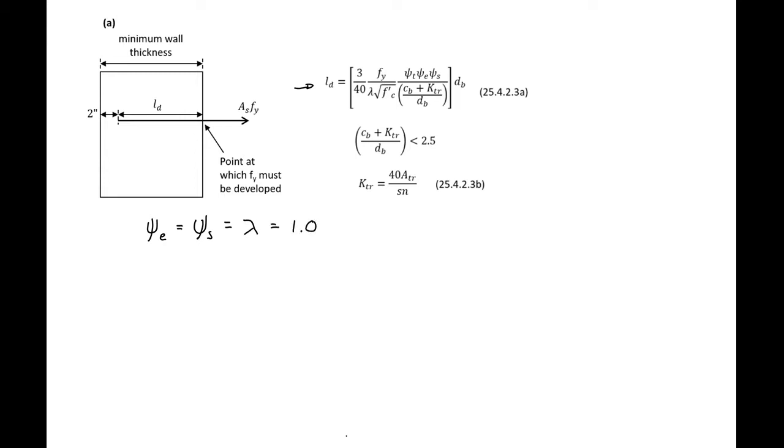It does appear that we have more than 12 inches cast below these bars, so our top bar factor is going to be equal to 1.3.